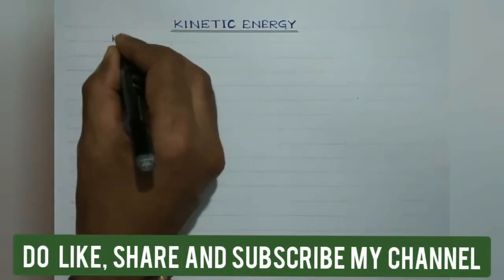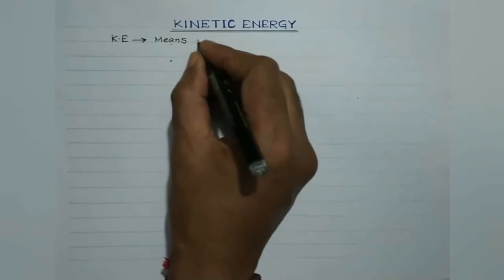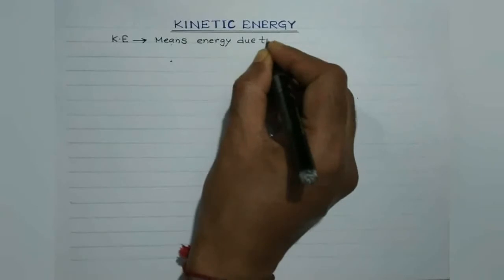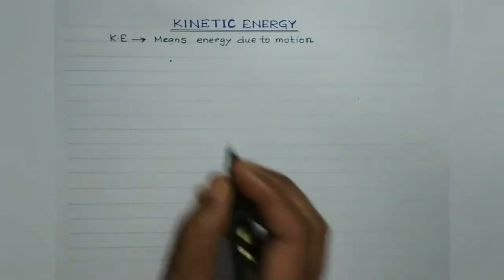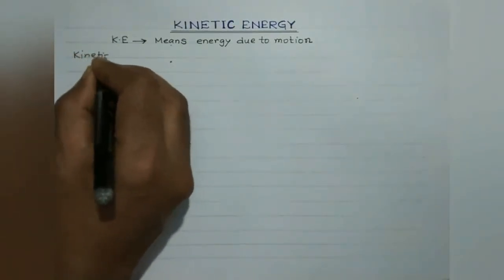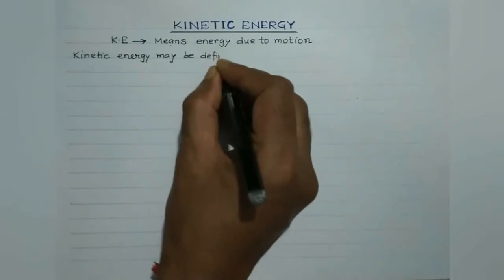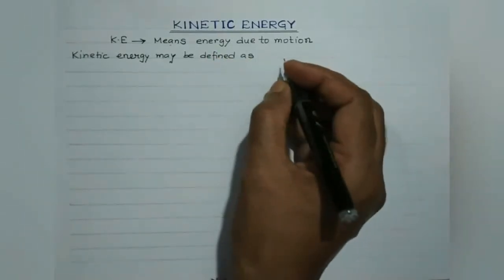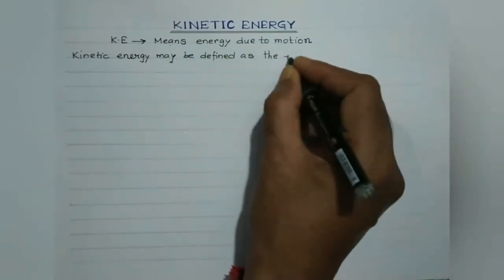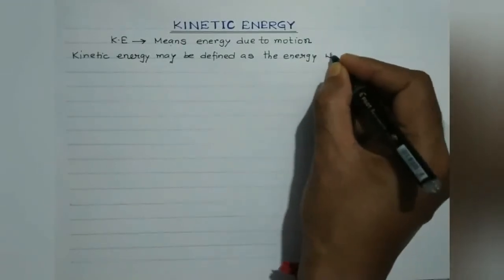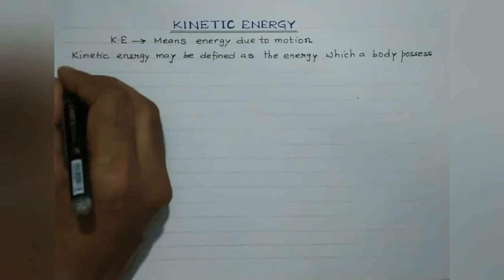Kinetic energy can be represented as KE, meaning energy due to motion. Any object which is moving or in motion will possess kinetic energy. Therefore, kinetic energy may be defined as the total energy which a body possesses by virtue of its motion.